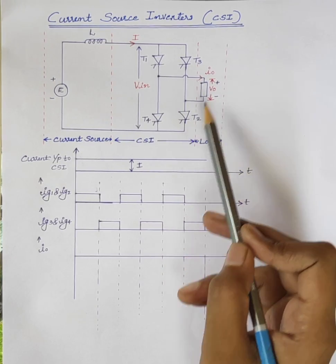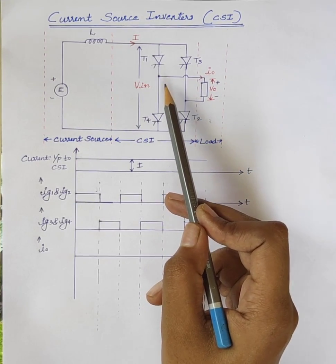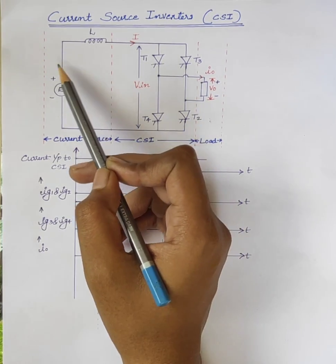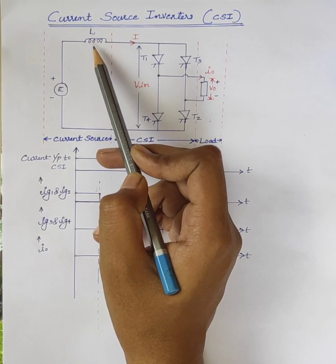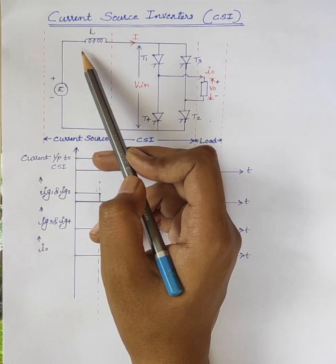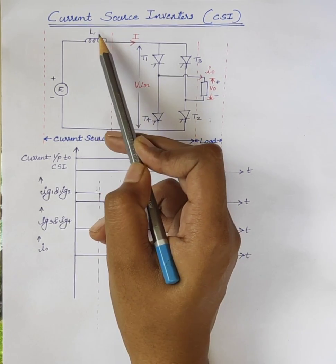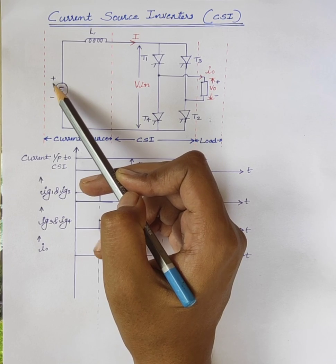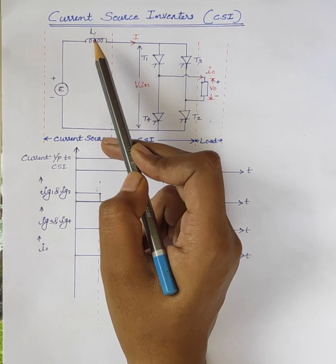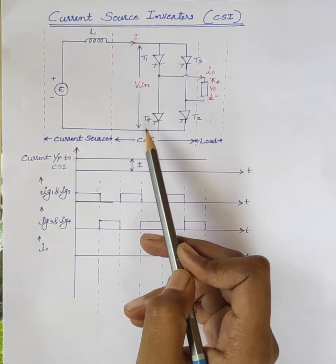The figure shows the circuit diagram of current source inverter. The current source consists of a voltage source E and a large inductance L in series with it. The function of this high impedance reactor in series with the voltage source is to maintain a constant current at the input terminals of the current source inverter.